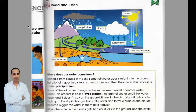Where does our water come from? Rain falls from clouds in the sky. Some rain water goes straight into the ground, but a lot of it goes into streams, rivers, lakes, and then the ocean. This process is called precipitation.